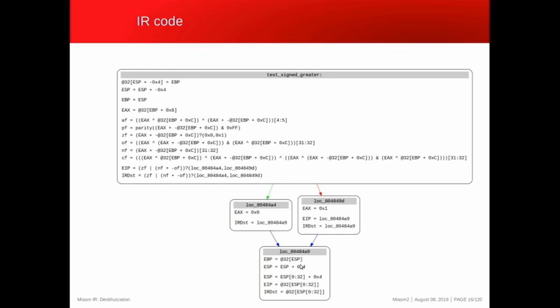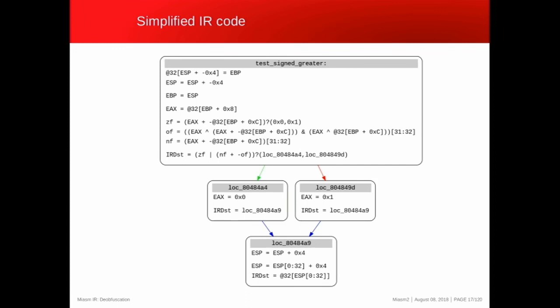The first thing we can do is apply passes on the IR to generate a modified IR with code simplification. The most common pass is dead code elimination. On x86, you don't need the EFLAGS at the end of a function, so the computation of the carry flag is no longer used. Since it's not used, the computation is not needed and can be removed. After applying this simplification, the resulting code is simpler and easier to read.